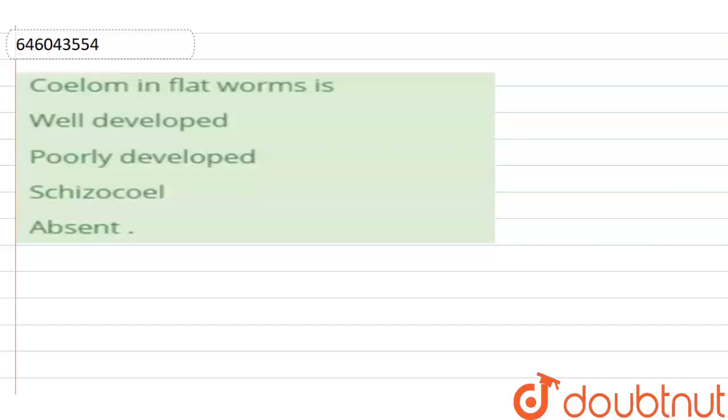Hello, the question is: Coelom in flatworms is - first option: well-developed, second option: poorly-developed, third option: schizocoel, fourth option: absent.